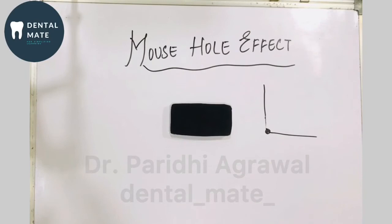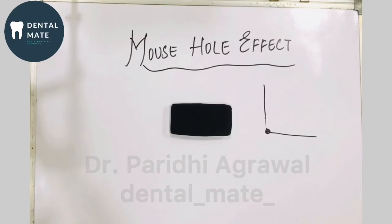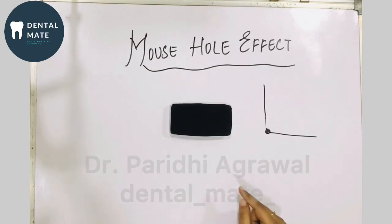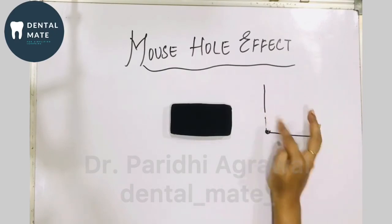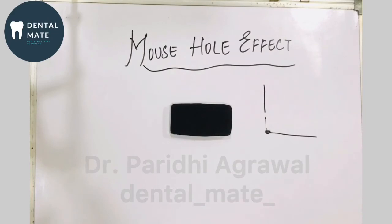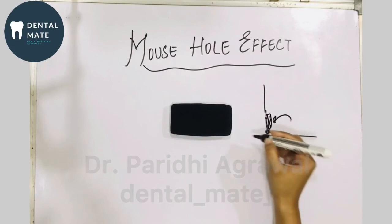This mouse hole effect occurs because of the extension of the canal orifice in the axial wall. What we need to do is intervene all the dentine from the orifice and completely remove all the dentinal shoulders — then this mouse hole effect can be eliminated. It is necessary to eliminate the mouse hole effect because the presence of the orifice in the lateral wall could cause strain in the file.